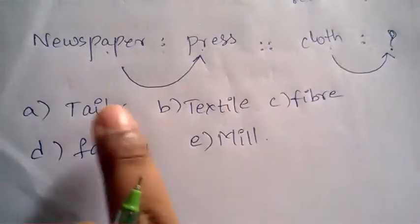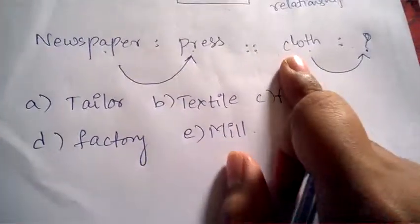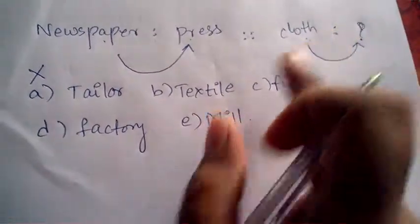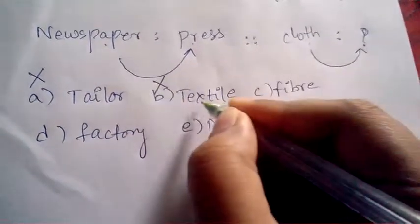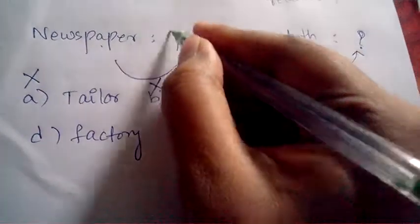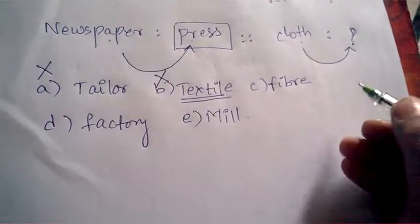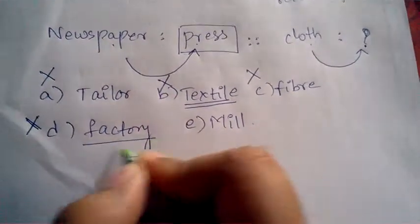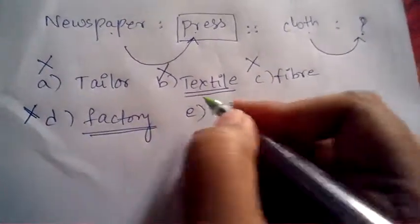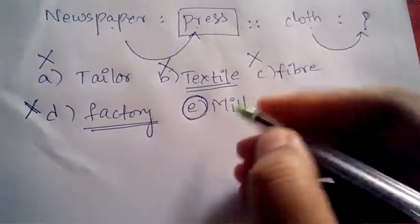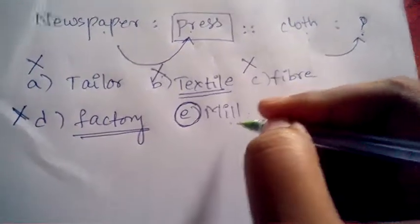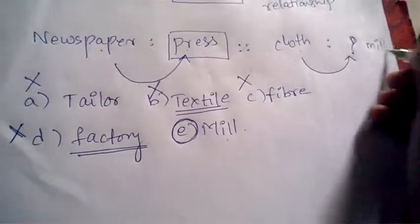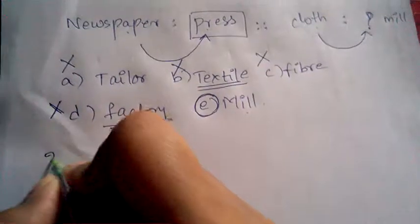Newspaper is prepared in the press, so cloth is prepared where? Tailor is a person, not a place — wrong. Textile is also not a place. Fiber is not a place. Factory is where products are made and produced, but not clothes specifically. Mill is the correct answer because cloth is manufactured in the mill. So mill is the correct answer.